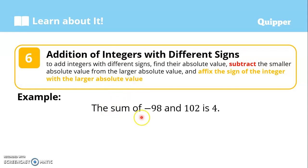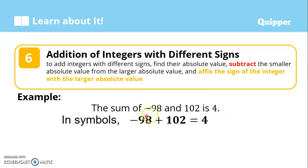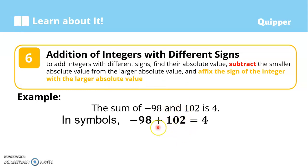Example: the sum of negative 98 and 102 is 4. In symbols, this is negative 98 plus 102. They have different signs — negative and positive. So we subtract them: 102 minus 98 gives us 4. Copy the sign of the larger absolute value, which is 102. The sign is positive, so the answer is positive 4.